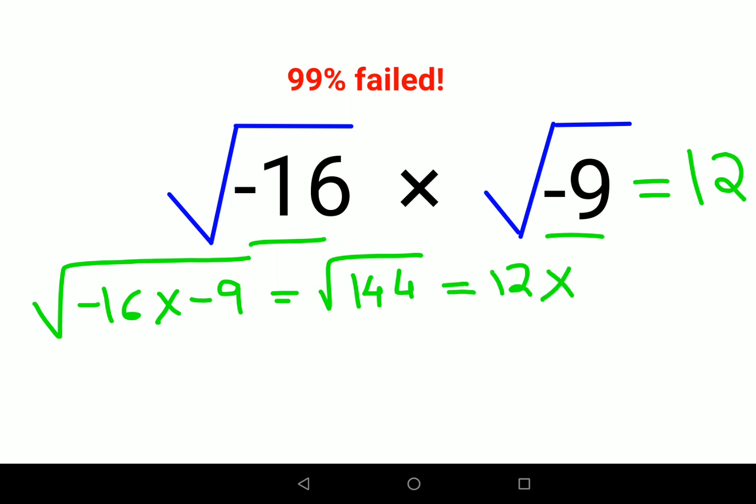Now where did they go wrong? In this first step itself. You can club the numbers inside a root if they are not imaginary. If they are imaginary, we are going to treat them as individual numbers.